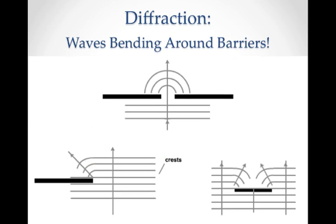Diffraction is where waves bend around barriers. For example, down in the left-hand corner here, if we have a wave front coming in and there's a barrier, then these waves will actually turn and start heading outward when they come around the barrier.